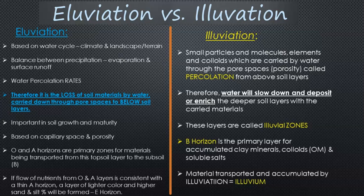So eluviation is the process of taking and washing out small particles, ions, and elements out of a layer and moving them down to deeper layers. That creates illuviation — the enrichment, storage, and depositing of the carried materials by the water at a certain depth where the water can't go further, capillary spaces are too small, or bulk density is too high. The material is then deposited and enriched in a certain layer, most commonly the B horizon, which is the accumulation zone. These areas are called illuvial zones.